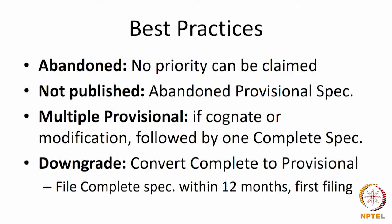One of the things you could do with the provisional is file it and, if you do not follow it up with a complete, then the provisional is deemed to have been abandoned. The advantage of something being abandoned is that it is not published, so it does not come into the public domain. But when you abandon, you cannot claim the priority of that provisional anymore. The provisional is as though you had withdrawn it from the system — a copy does not exist, it is not published, and the matter does not fall into the public domain. However, the person who gives up a provisional specification will also give up the priority.